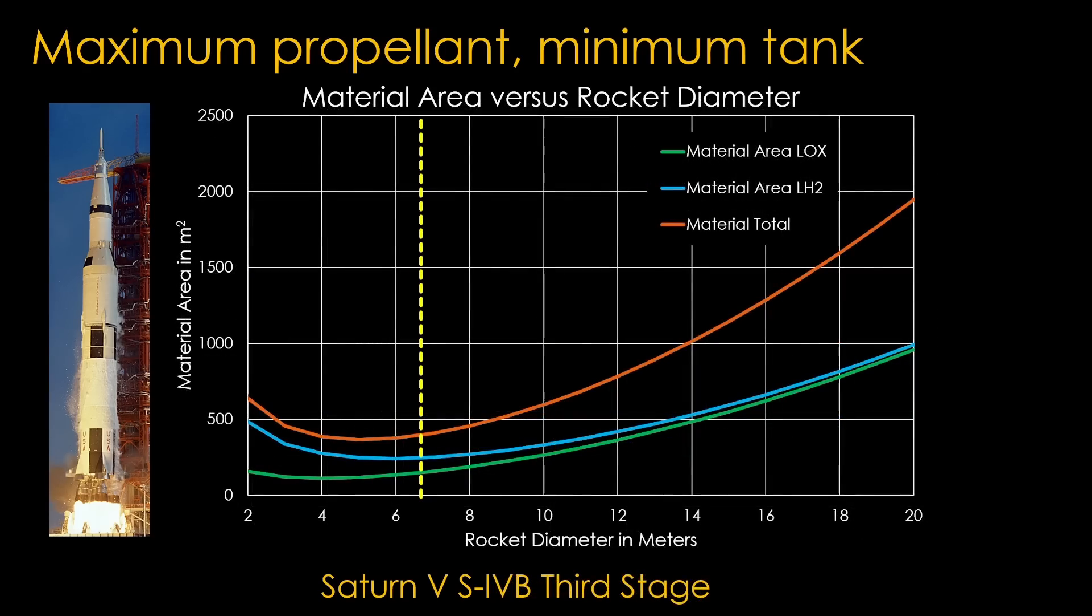The third stage also uses liquid hydrogen, but carries less propellant. It not surprisingly prefers a smaller diameter of about 5 meters, but it is pretty good at the actual 6.8 meter diameter. If it had maintained the 10 meter diameter, it would use 50% more material in its tanks than it did at 6.8 meters. And that explains why their Saturn V has that weird step between the second and third stages.